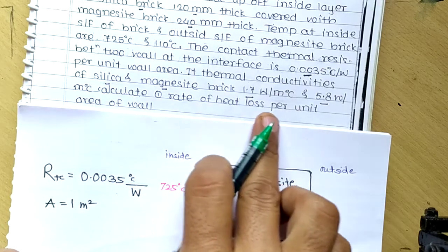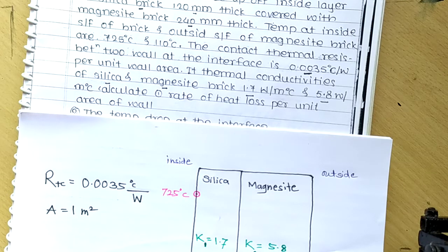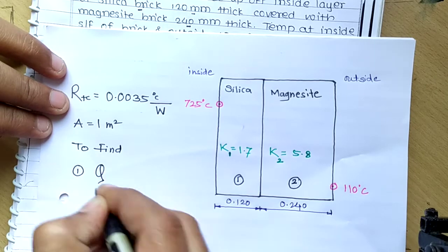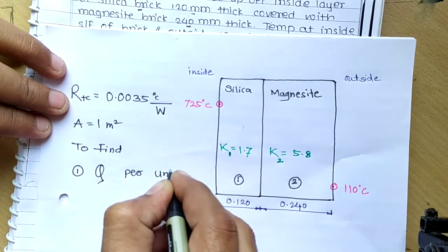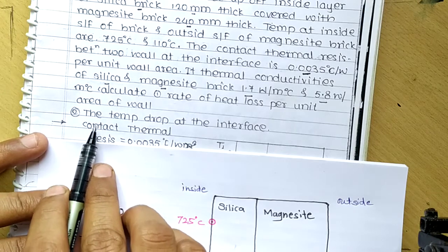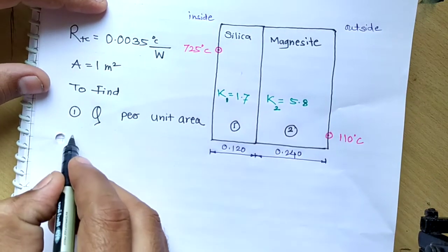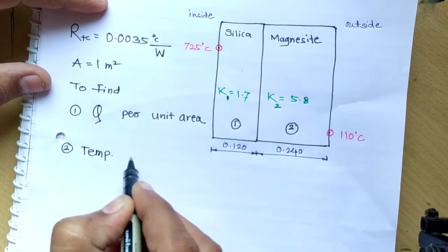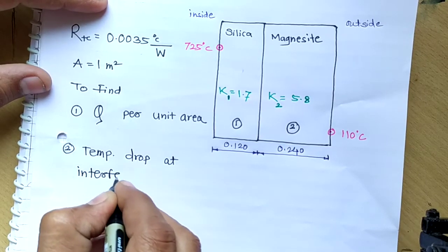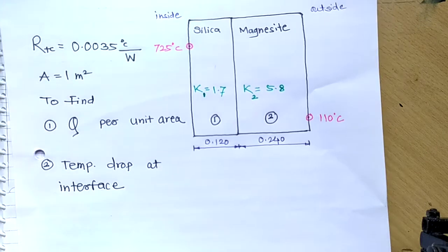Now let's check what we have to find. First, we need to find the rate of heat transfer per unit area, i.e., q per unit area. Second, we need to find the temperature drop at the interface — that is, the temperature drop at the point where silica and magnesite meet. These are the two things we have to determine.